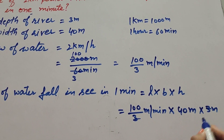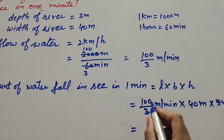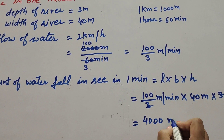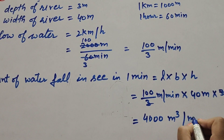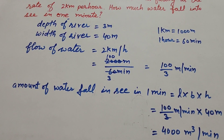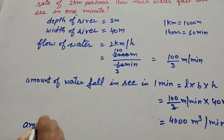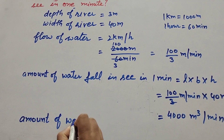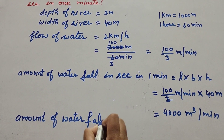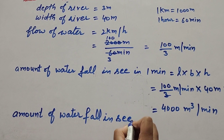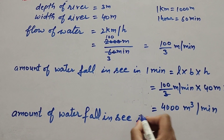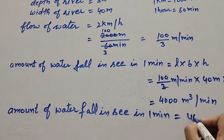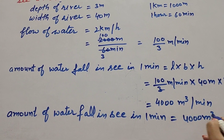The 3 in the numerator and the height of 3 meter cancel each other. So we get 100 × 40 = 4000 meter cube per minute. Therefore, the amount of water falling into the sea in one minute is equal to 4000 meter cube.